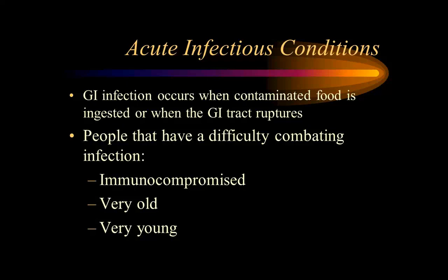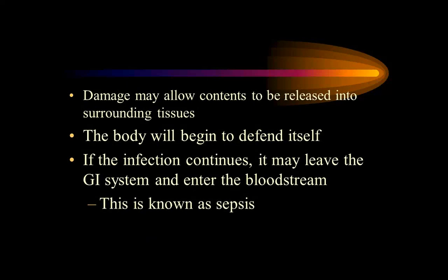Immunocompromised patients — HIV, cancer — are particularly vulnerable. Any damage to tissues allows the surrounding tissue to release cytokines, enabling the body to be invaded by bacteria, viruses, fungi, tapeworms. Sepsis is the process where infection spreads from the GI system or any system into the bloodstream.